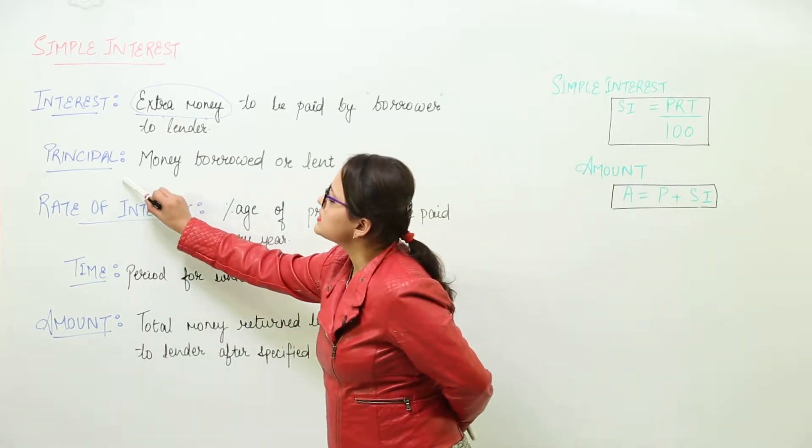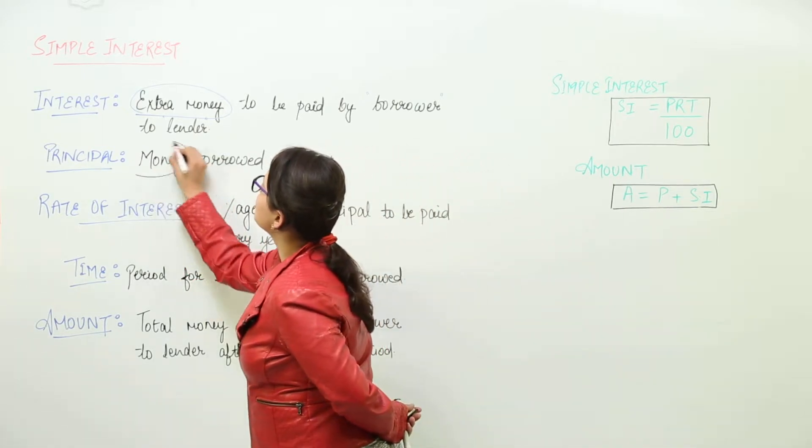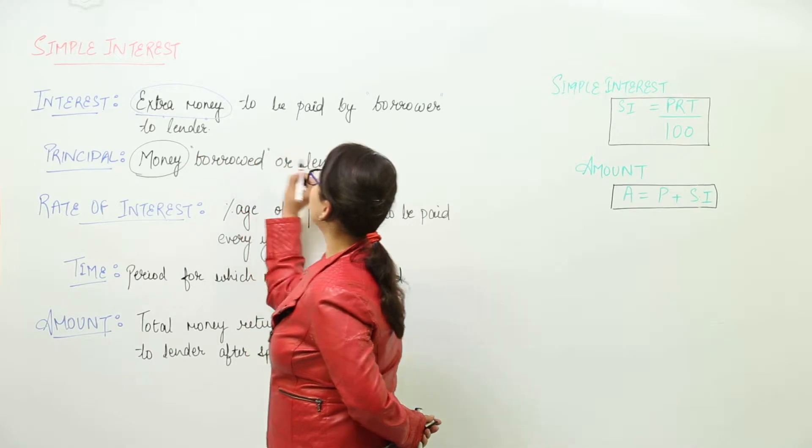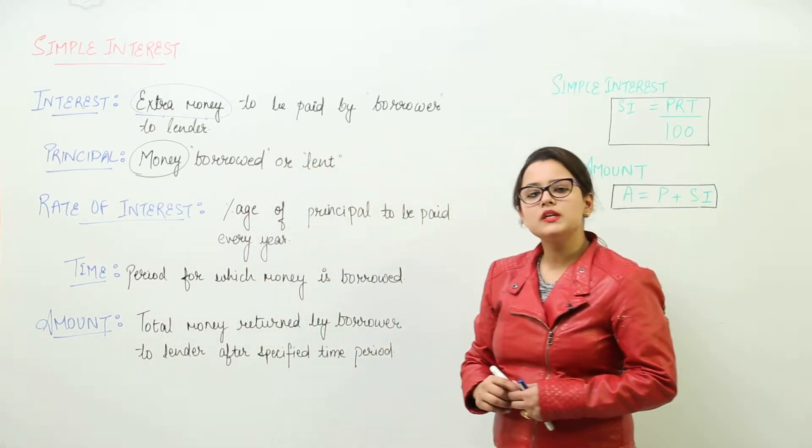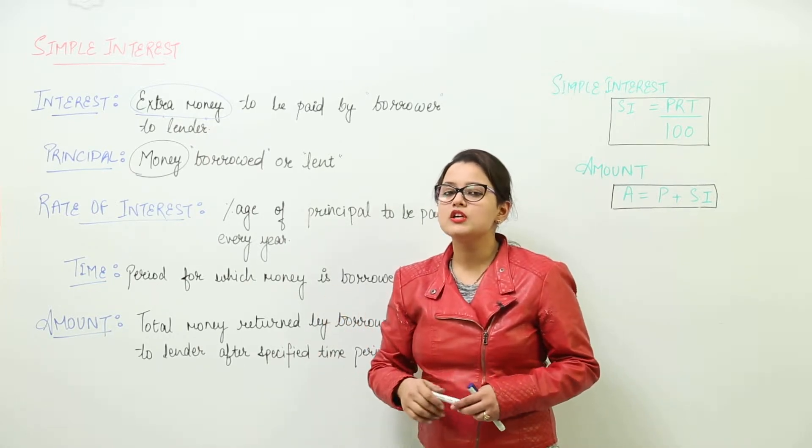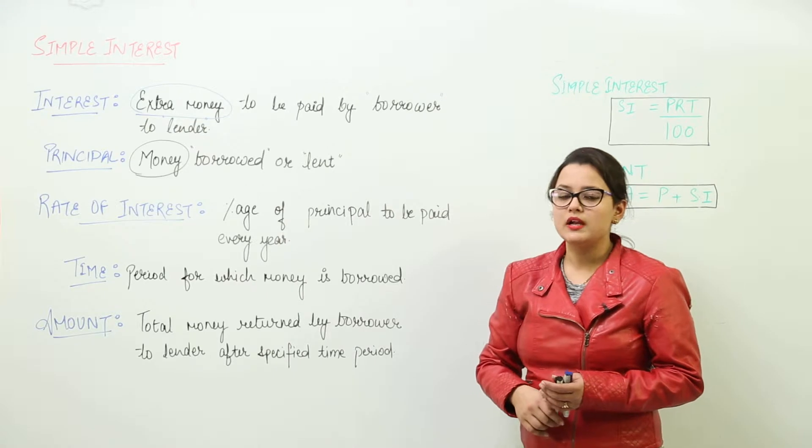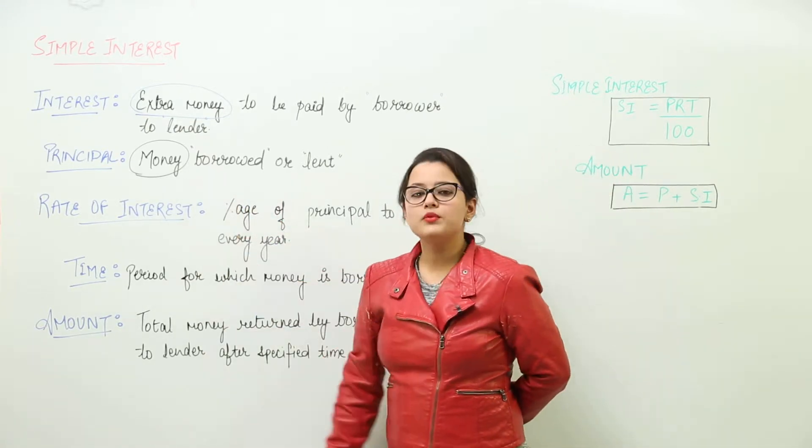So next is the principal. The amount of money borrowed or lent. The money that has been borrowed or lent represents the principal. How much money did I borrow from my friend, or how much money did she lend me? She lent me 100 rupees, and so I have borrowed 100 rupees. So 100 rupees represents my principal.